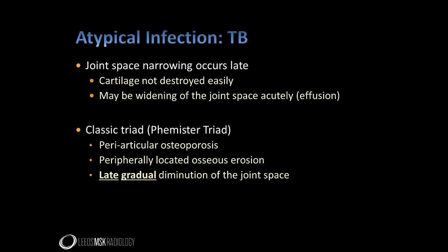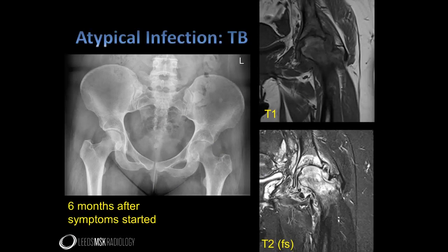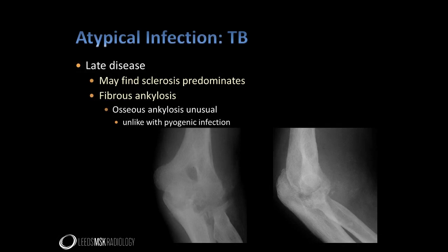The classic description of the radiographic appearances of TB arthritis describes three features known as the Phemister triad, which emphasises the late and gradual loss of joint space seen in TB in contrast to the rapid joint destruction seen with pyogenic arthritis. This patient had had left hip pain for about six months before seeking medical attention. There is periarticular osteopenia, but in contrast to the pyogenic cases, the joint space is still relatively well preserved. MRI shows the bone oedema, joint effusion and synovitis with periarticular oedema. Later in the disease, sclerosis may become a feature of TB arthritis as demonstrated in this elbow joint. In contrast to pyogenic joint infection, osseous ankylosis of the joint is relatively unusual; with TB, severe joint involvement more commonly leads to a fibrous union across the joint.